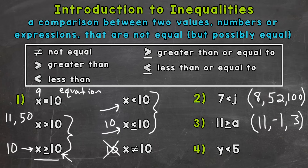And lastly, number 4: we have y is less than 5. This is just a less than sign, so 5 is not included in the solutions. Anything less than 5 would work — so we could do negative 9, 0, or 1. That list goes on forever because we have an infinite amount of solutions for values that are less than 5.